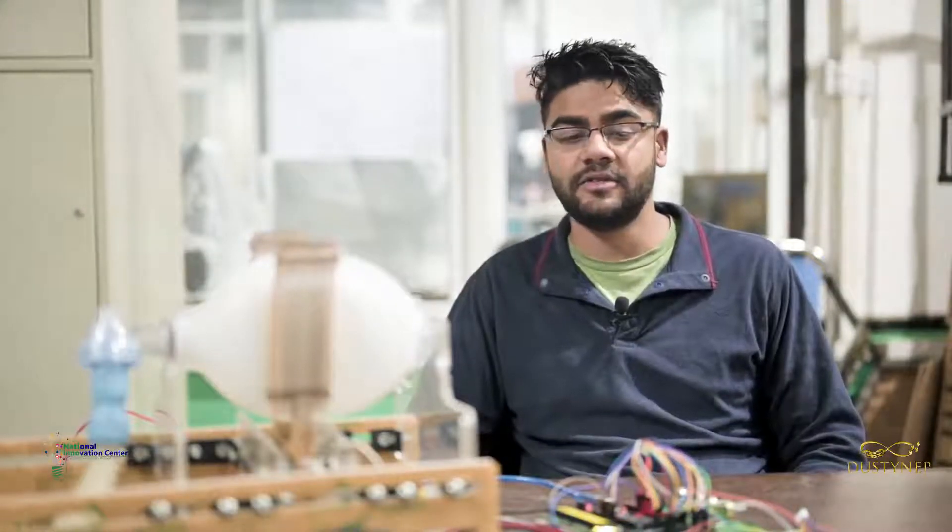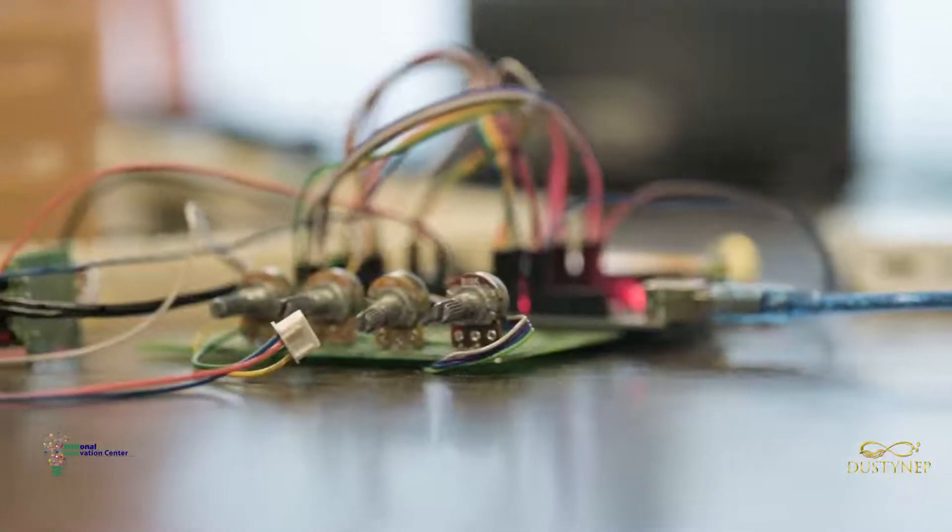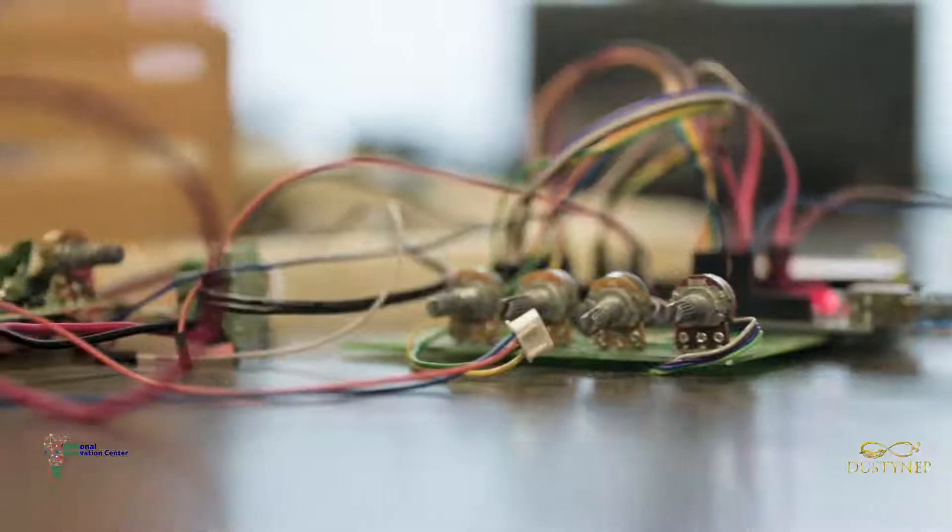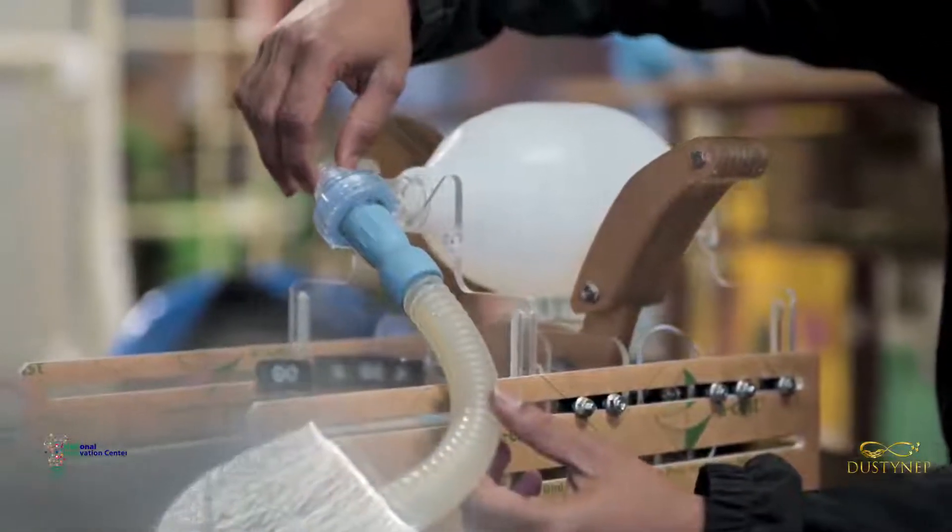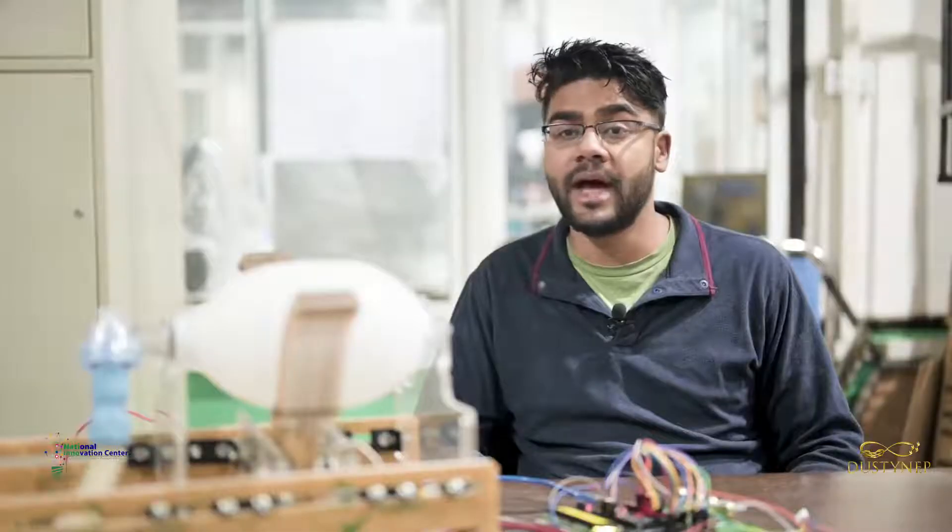This model has basically two parts: one is electronic and the other one is mechanical. The electronic part controls the in and out motion arm that pushes the AMBU bag, and the AMBU bag is what is used by frontline healthcare workers in emergency situations.